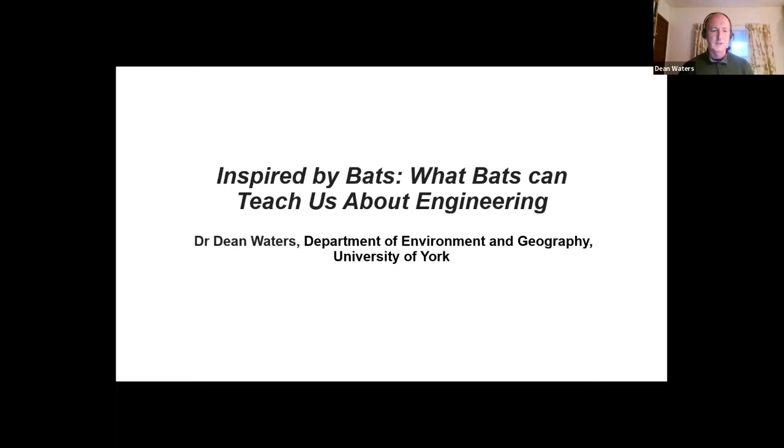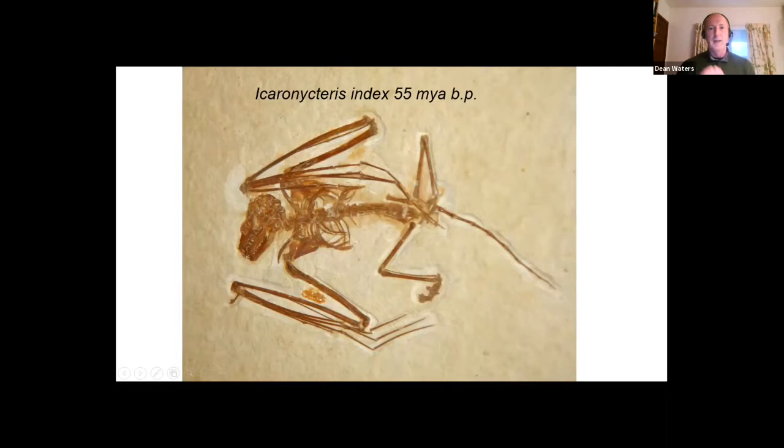What I'm going to talk about is the way that bats inspire us and how we can learn things about what bats do. Going back to the history of bats, this is a picture of the fossil bat Icaronycteris index from about 55 million years before present, from the Green River Formation in Wyoming. It's a particularly good formation for preserving fossils because it's very fine grain, so it preserves them with incredible detail.